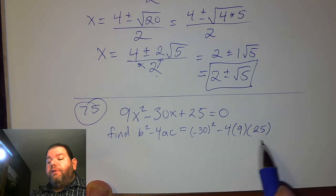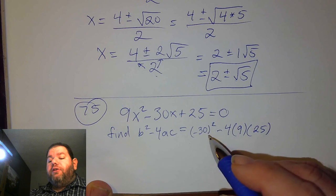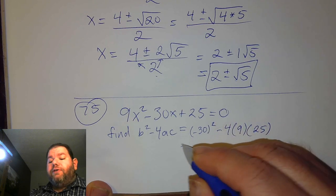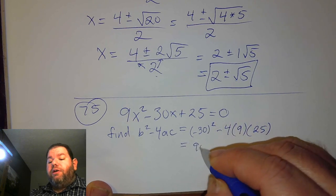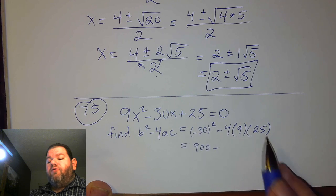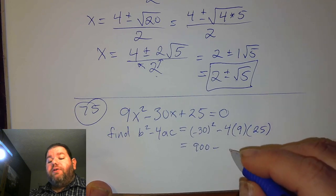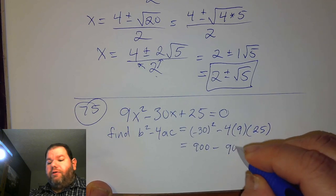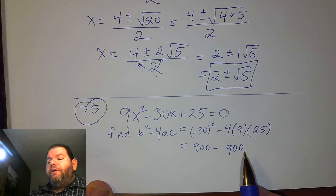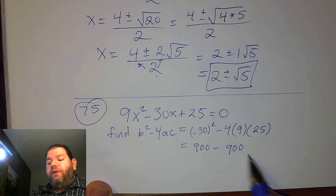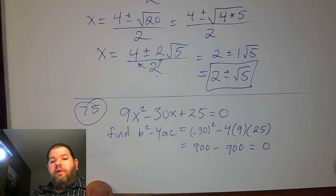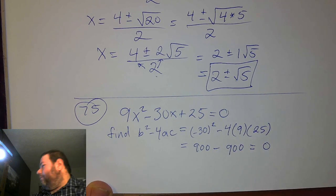We go ahead and complete these operations. Negative 30 squared is 900. And then 4 times 9 times 25, which is also 900 it turns out. So we end up getting 0 as the value of our discriminant.